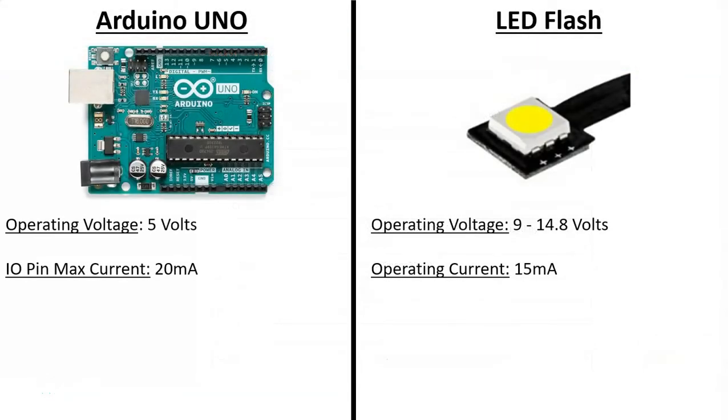Now if we compare both the Arduino Uno and the LED flash, we can see that the operating voltage of the Arduino Uno is 5 volts while the operating voltage of the LED flash is between 9 and 14.8, and the max current out of a pin for the Arduino Uno IO pin will be 20 milliamps, whereas the LED flash needs 15. On the current we're okay, except the difference being that those currents are at different voltages, being a higher voltage than the LED. So we're going to need to try something else. We're not going to just connect it directly to the Arduino Uno. For this, we're going to use a transistor, specifically the BC547 NPN transistor as a switch.